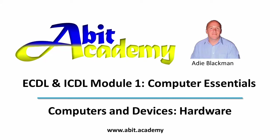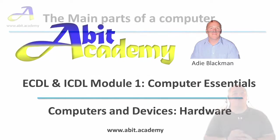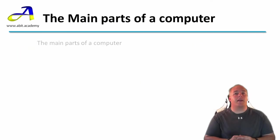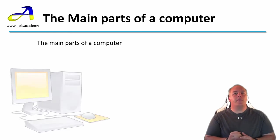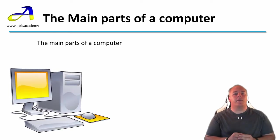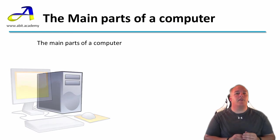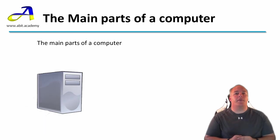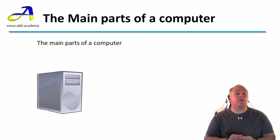Welcome back. Let's take a look at the main parts, or components, that make up a computer. Do you remember from the last video which part of this picture is the actual computer? It's the grey box on the right. The other items are peripherals — in this case, the keyboard, mouse, and monitor.